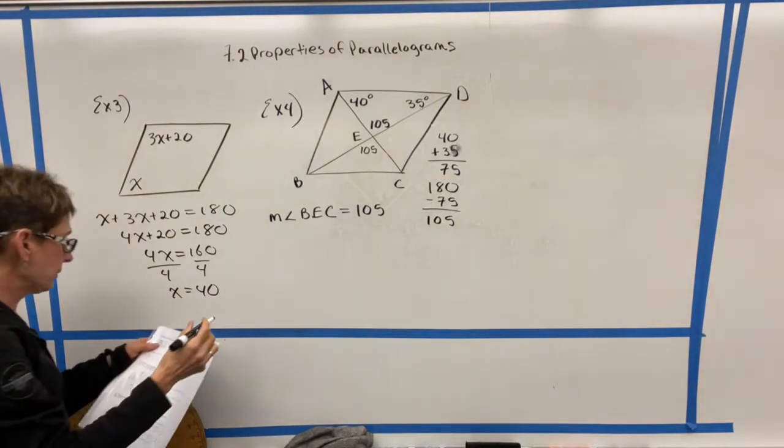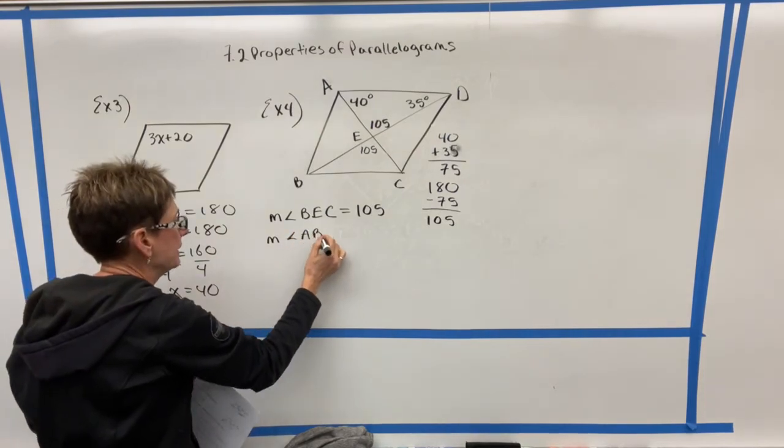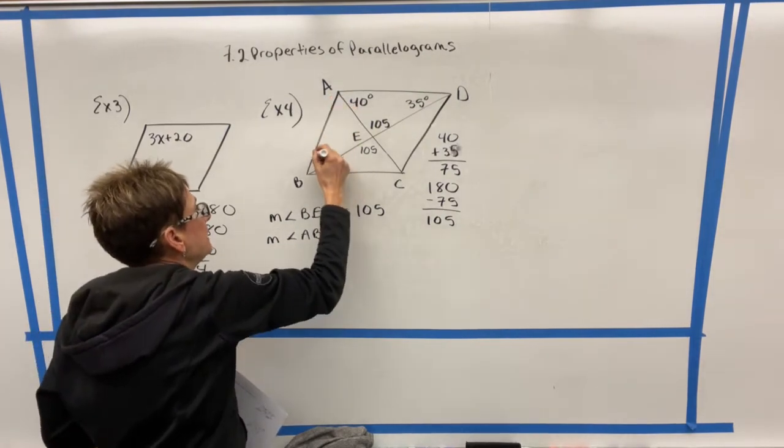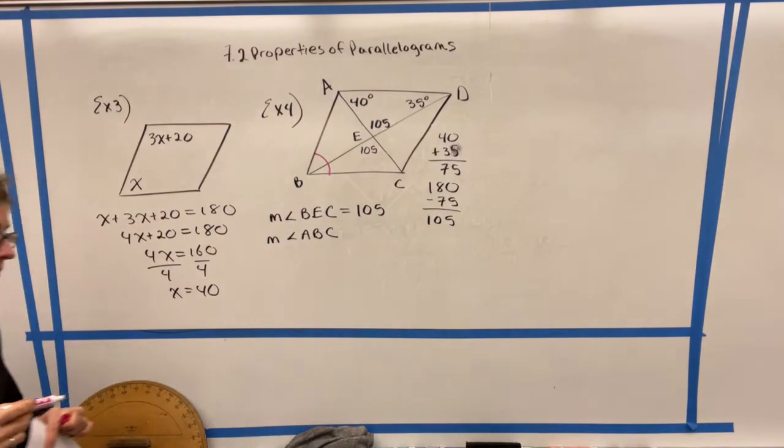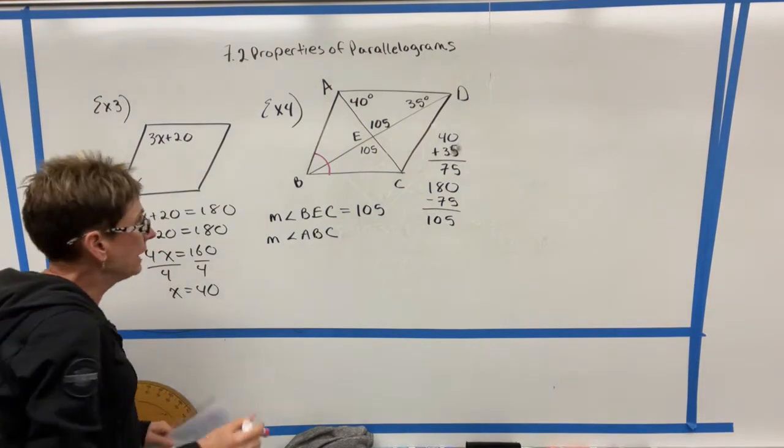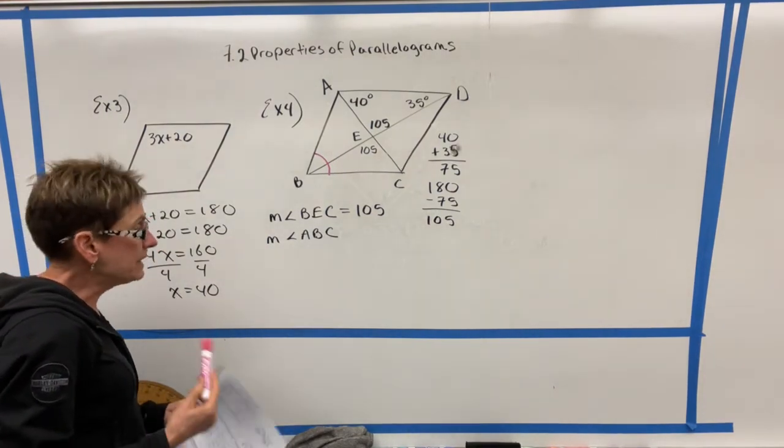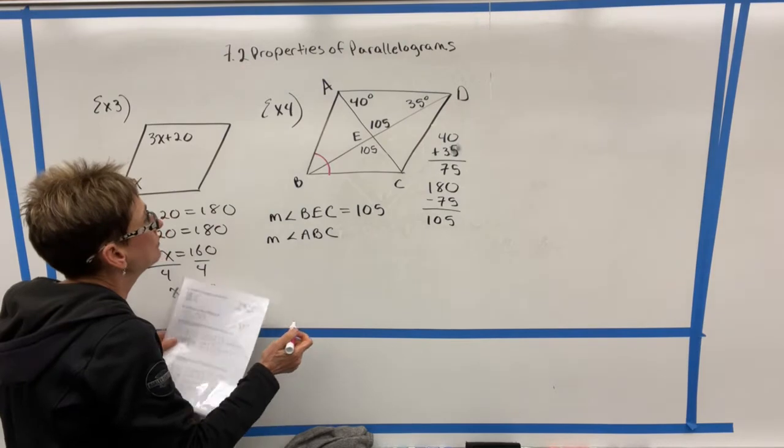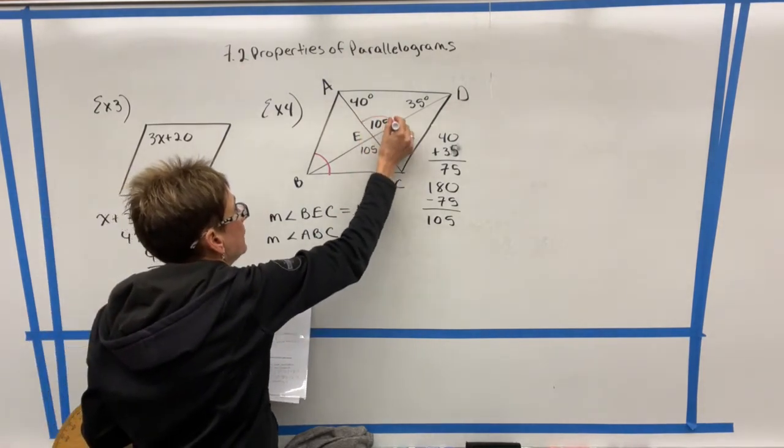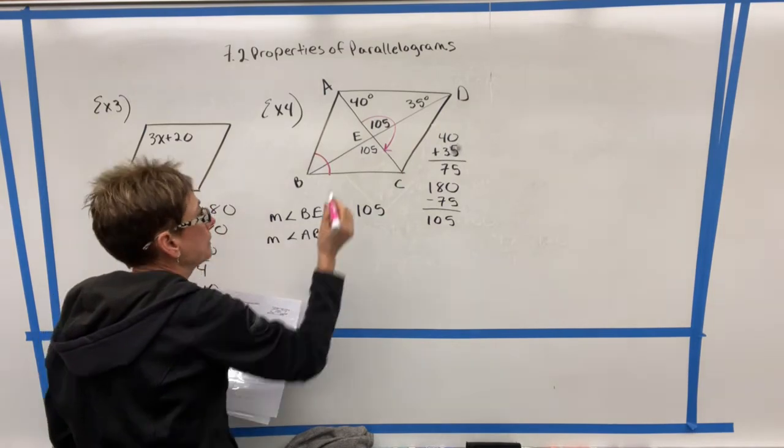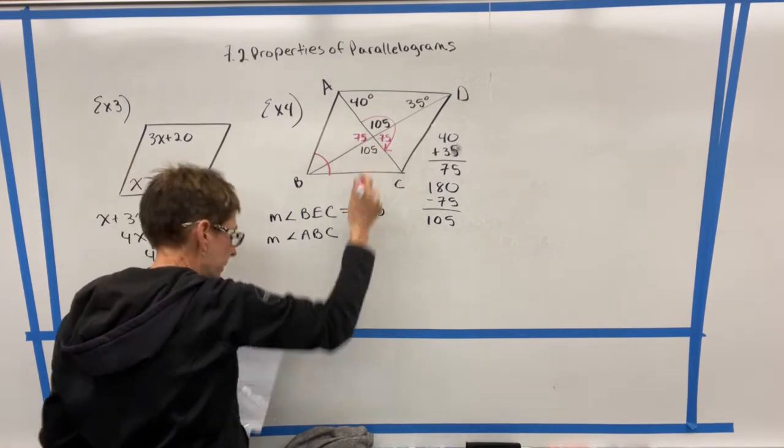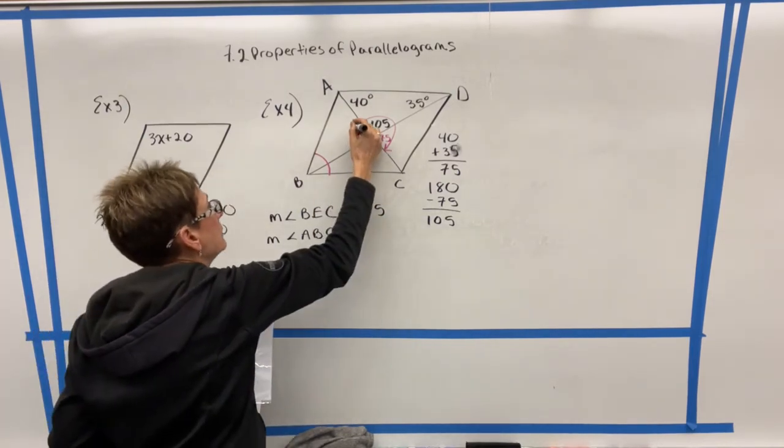So this angle has to be 105. And since B, E, C is right across from that, it's a vertical angle with that one, this one is also going to be 105. Okay, the next question we're asked is for the measure of angle ABC. So let's kind of look at where that angle goes. If we go from A to B to C, we're looking for this angle right here. So in order to do this, we're going to have to kind of work our way around the triangle.